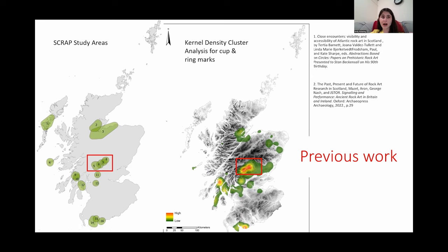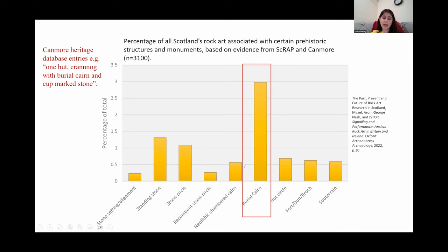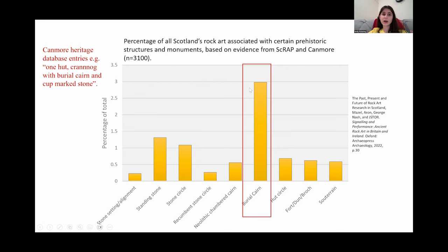Usually before testing whether two point patterns are attracted or separated from each other you would first have to establish that they are themselves either clustered or dispersed. However we skip this step since SCRAP had already performed kernel density cluster analysis in ArcGIS. Now cup and ring marks have a very long chronology spanning the Neolithic period to the early Bronze Age, and because of that a lot of researchers believe they may have a spatial association to other monuments created during that time period. For example, SCRAP found a high percentage of rock art associated with burial cairns, however they measured association by field walking, visually inspecting maps and checking Canmore heritage database entries — so this is more of a circumstantial correlation and not proven statistically. That's what I decided to do with my project.